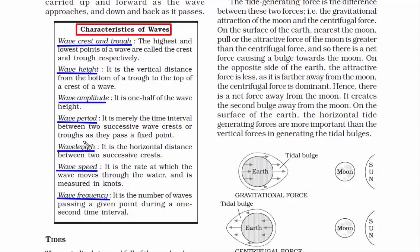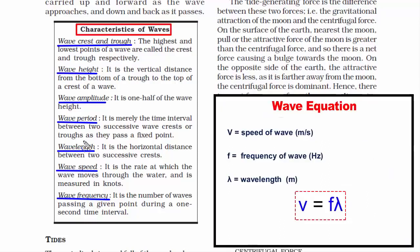The wave speed equation is: V equals F times lambda, where V is the speed or velocity of the wave, F is the frequency, and lambda is the wavelength. Wavelength is the distance between two crests or two troughs. Frequency is the number of waves that travel in one second. Multiplying these two gives you the speed or velocity of the wave.